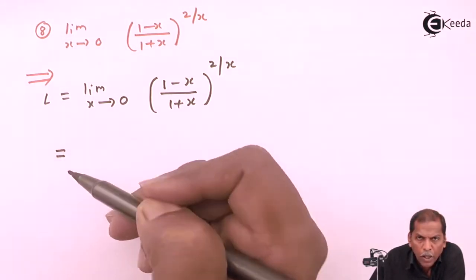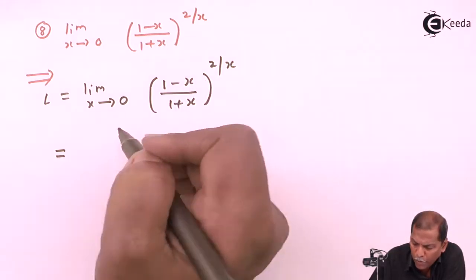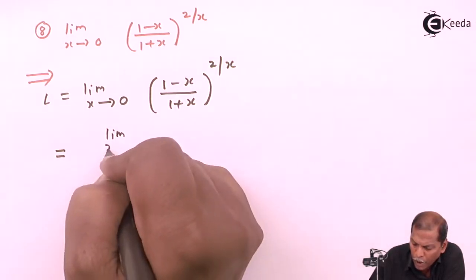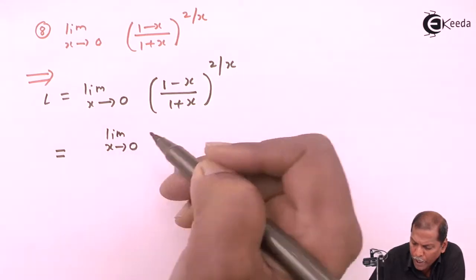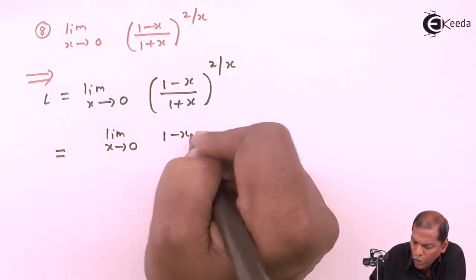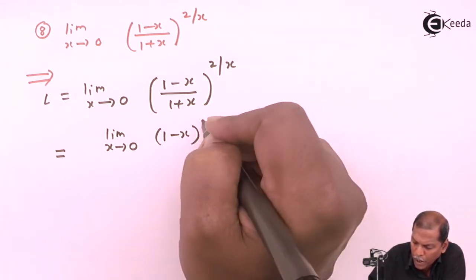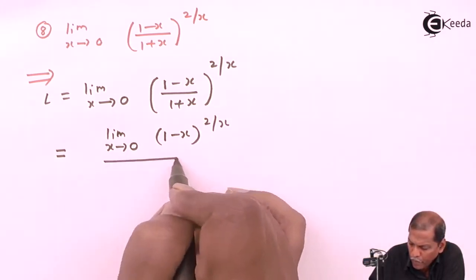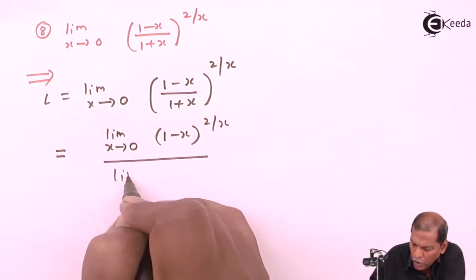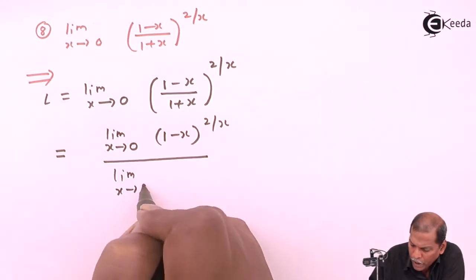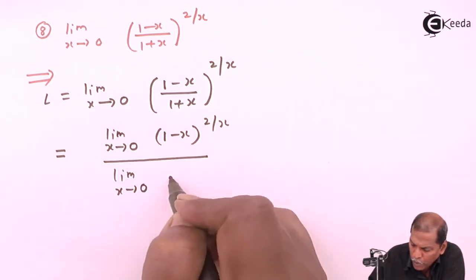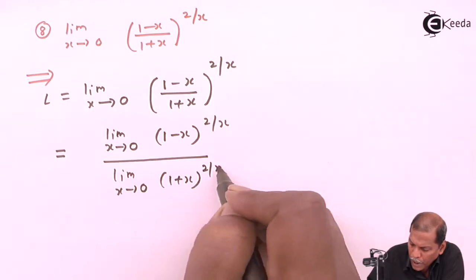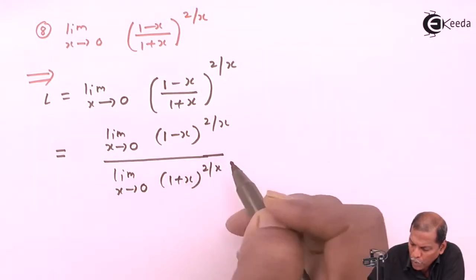Here we split it into 2 limits. In the numerator we have limit x tends to 0, 1 minus x raised 2 by x, upon limit x tends to 0, 1 plus x raised 2 by x.